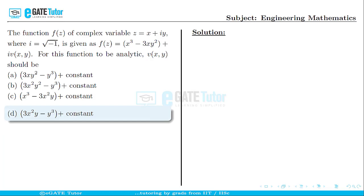The next question in GATE 2020 Set 2 Mechanical Engineering question paper is from engineering mathematics. The function f(z) of a complex variable z = x + iy, where i = √(-1), is given as f(z) = x³ - 3xy² + iv(x,y). For this function to be analytic, v(x,y) should be: